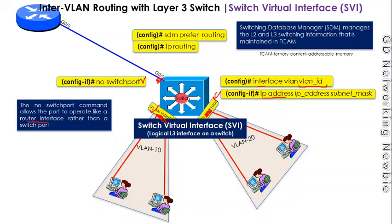We can give an IP address and subnet mask to that port, and with this basic information we are going to implement the same idea in Packet Tracer.